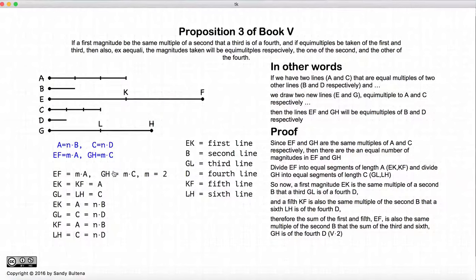So we have EK is an equal multiple of B, KF is an equal multiple of B, GL and LH equal multiples of D. So according to Proposition 2, the sum of EK and KF and GL and LH will be equal multiples of B and D respectively. So this comes from Proposition 2.